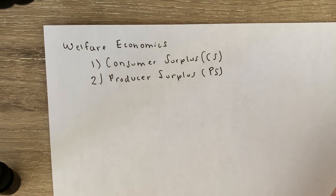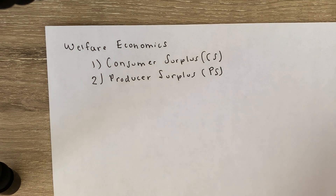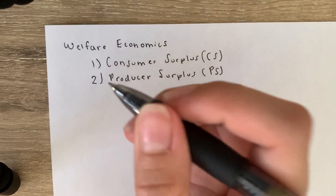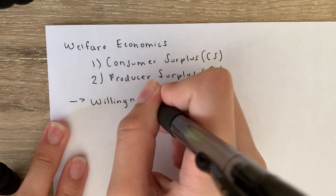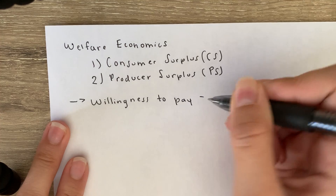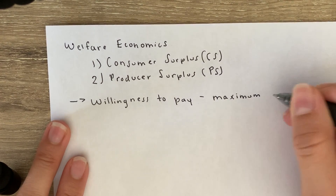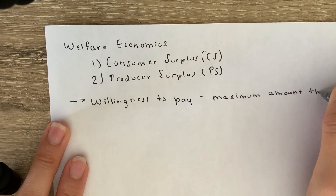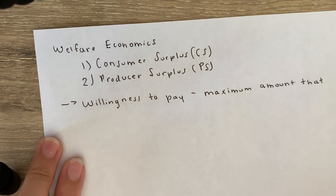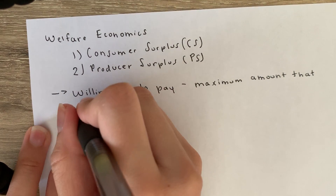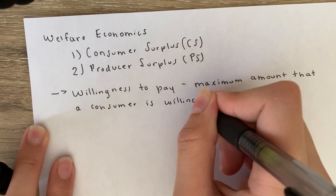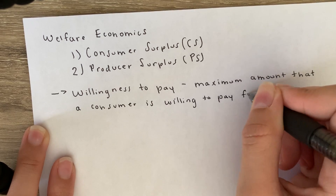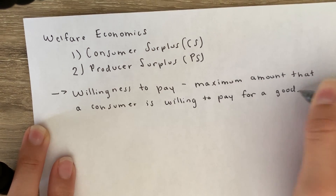It's really important for this section to know how to calculate these because it's going to get a lot more complicated when taxes come into play. There's an important definition we need to be aware of: willingness to pay. This is the maximum amount that a consumer is willing to pay for a good.